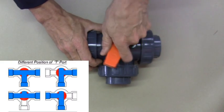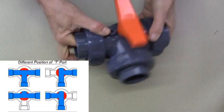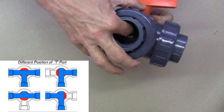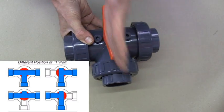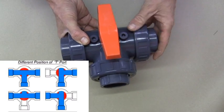If we turn the handle one way we find that now this side is blocked off so fluid can only pass through the angle here.